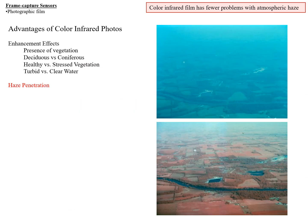Regarding haze penetration, we have a color image at top and a color infrared image at the bottom. Because Rayleigh scattering occurs mostly in the blue, recording blue, green, and red as in color images leads to a lot of scattering in blue and therefore a lot of haze and low contrast. In color infrared, we're not recording blue energy — we're recording green, red, and near-infrared — so there's some scattering in the green being recorded as blue, but much less overall. Therefore the color infrared image has much less haze and better contrast than the color image.